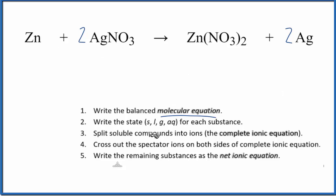Next, we need to write the state of each of the components here. So zinc by itself, that's going to be a solid, zinc metal. And then silver, solid by itself, that's going to be solid like that.